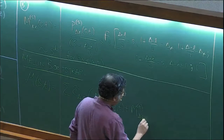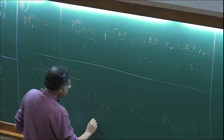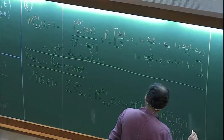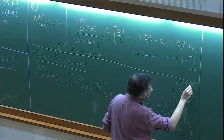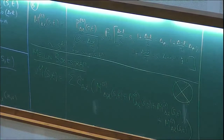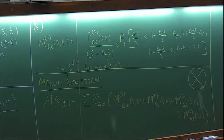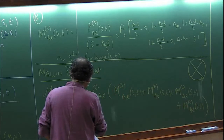So the idea of the Mellin bootstrap is that we expand things in terms of these Witten diagrams in S, T, and U channels in a crossing-symmetric way. We will also need a contact Witten diagram, about which I'll say something soon. So S, T, U correspond to the three exchange diagrams, and there's a contact diagram as well.